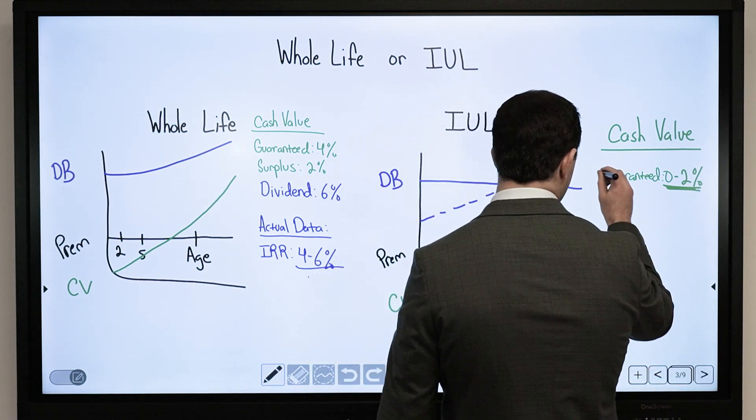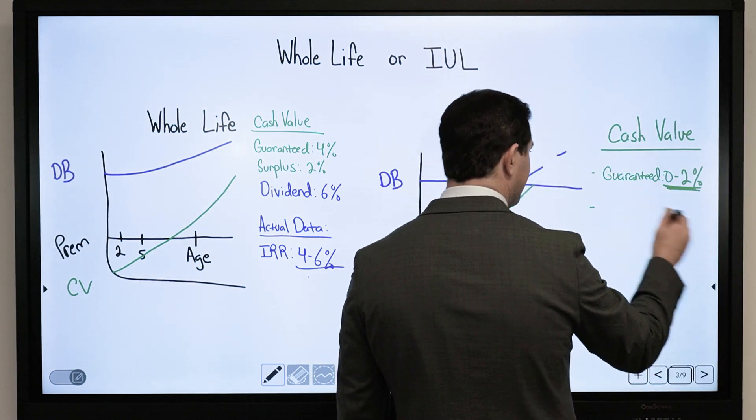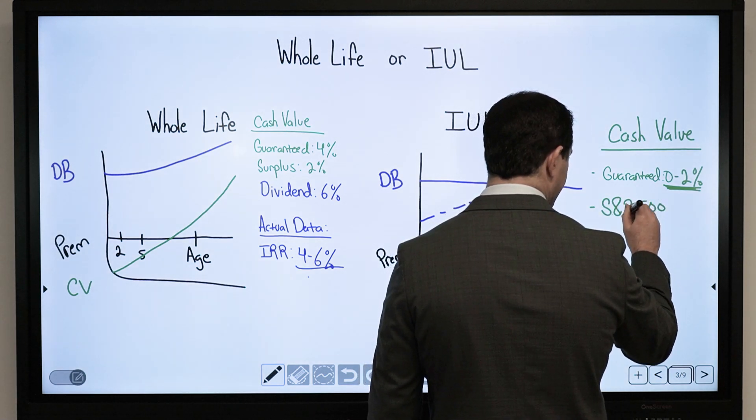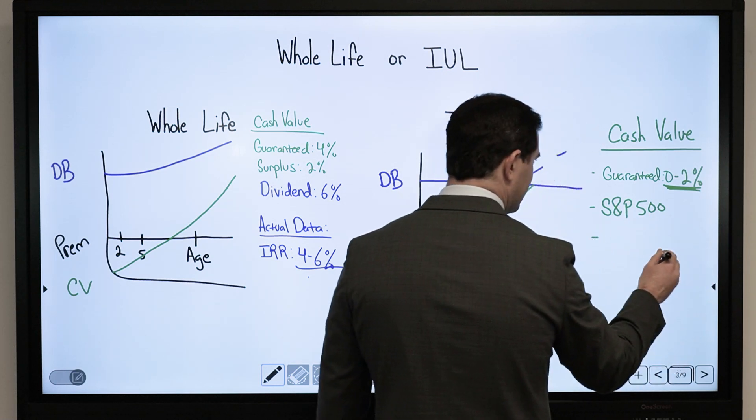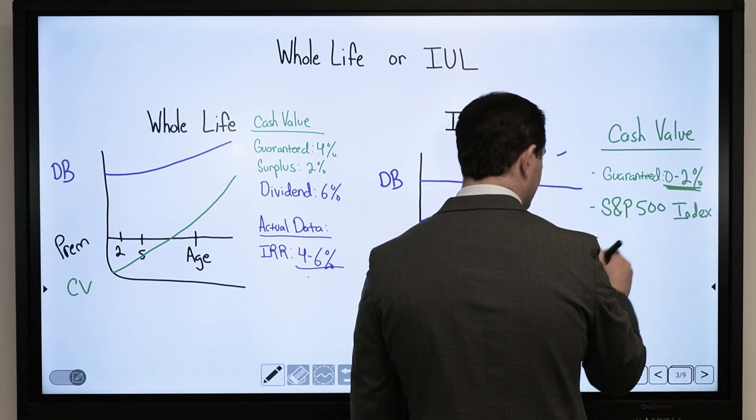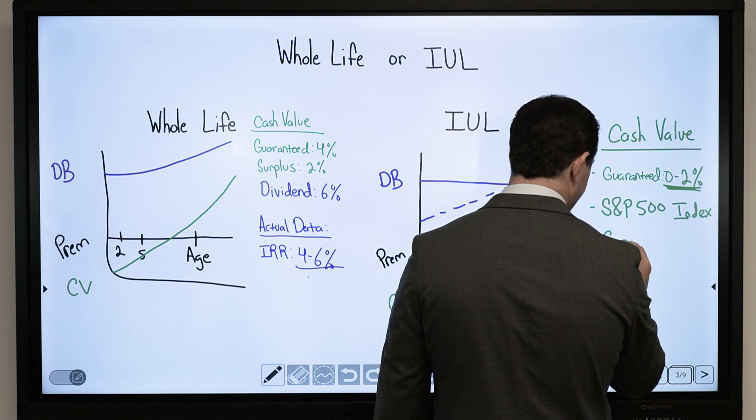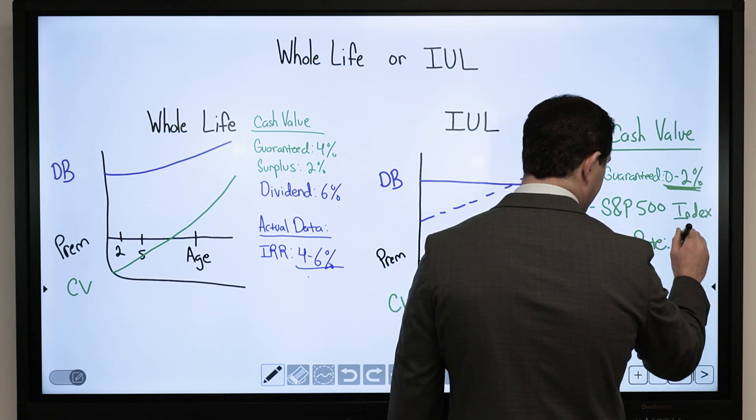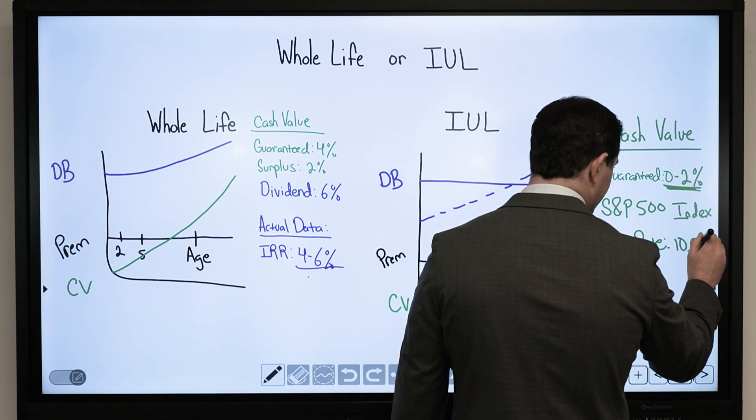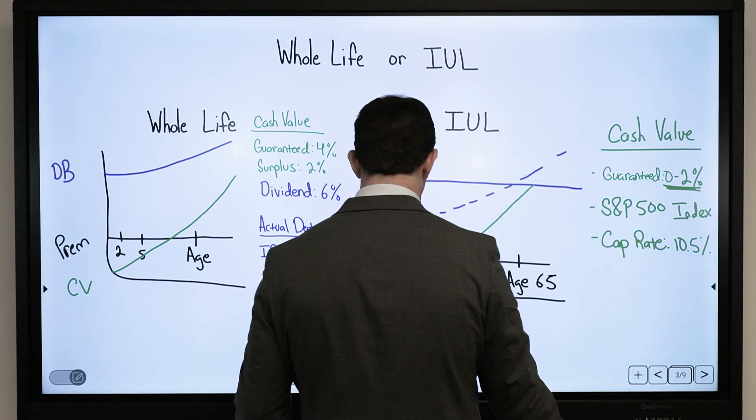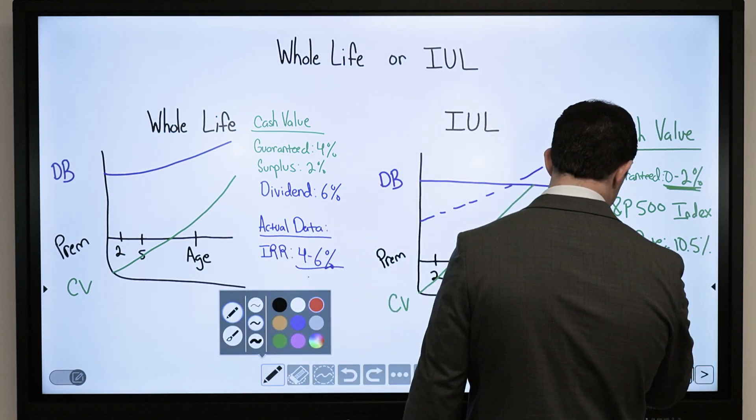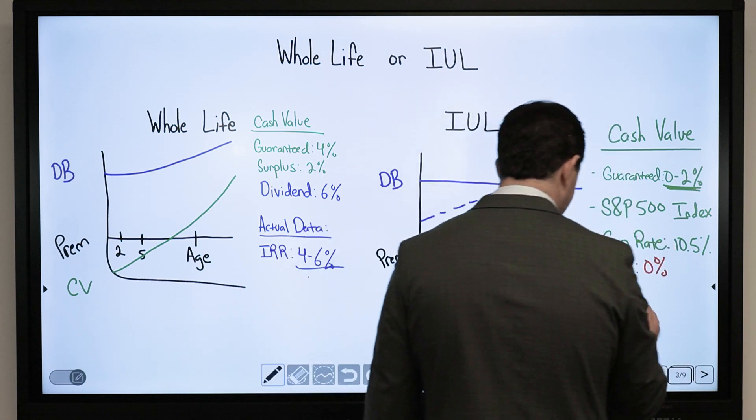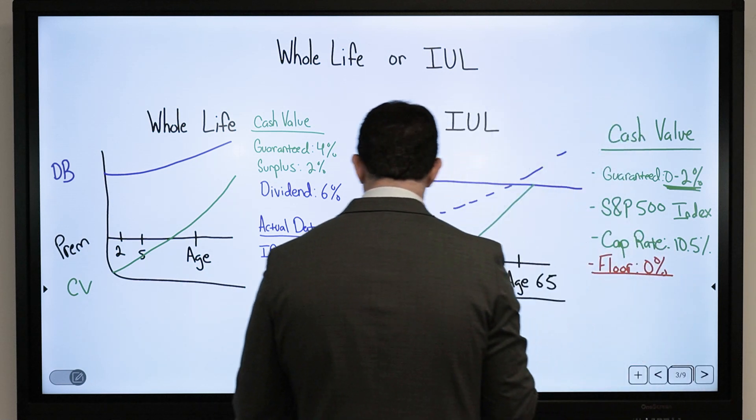The gains are tied to some type of index, the most common is the S&P 500 index. A couple things you'll see: we'll have a cap rate. Cap rates today with most companies might fall between 10.5% and 11%. You have a floor of 0%, that's the guarantee there.